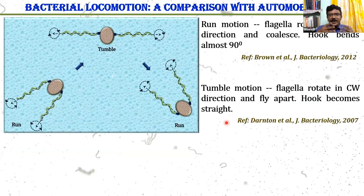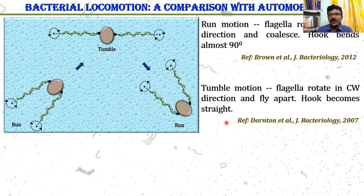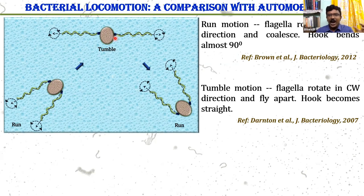If you look into the locomotive behavior of bacteria, you can see that in the run mode, the flagellum rotates in the CCW rotational mode. Whereas in the tumble mode, it rotates in the CW rotational mode. The flagellum is composed, from outside the cell, with a hook as well as the filament. During run motion, the hook bends almost 90 degrees, and that's why the filament bundles. However, in tumble mode, the hook becomes straight, and that's why flagella fly apart from each other.